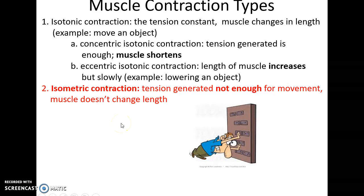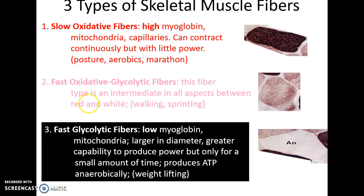Muscle contraction types: isotonic contractions are when tension is constant and the muscle changes in length — so you're moving an object. This can be concentric, where the muscle shortens as it moves an object, or eccentric, where the muscle lengthens in a controlled way, allowing you to lower an object without dropping it. Isometric contractions are where there is plenty of tension and force being generated, but the muscle does not change its length.